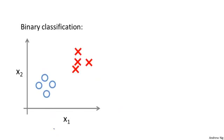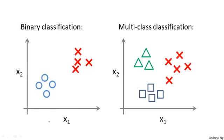Whereas previously, for a binary classification problem, our datasets look like this. For a multiclass classification problem, our datasets may look like this, where here I'm using three different symbols to represent our three classes. So the question is, given a dataset with three classes where this is an example of one class, that's an example of a different class, and that's an example of yet a third class, how do we get a learning algorithm to work for this setting?